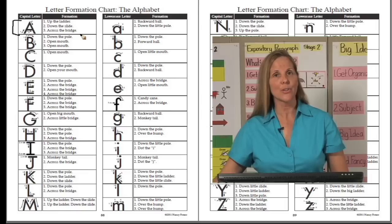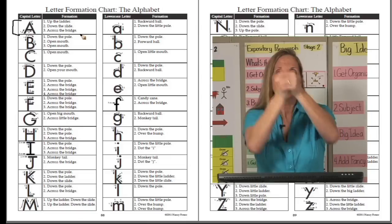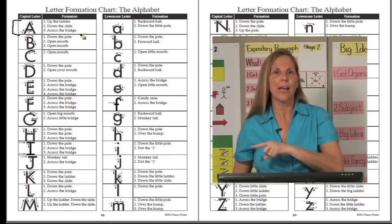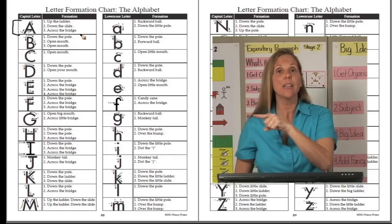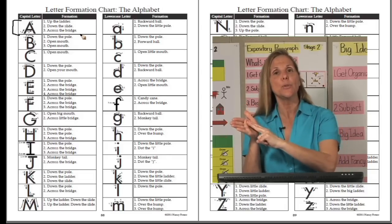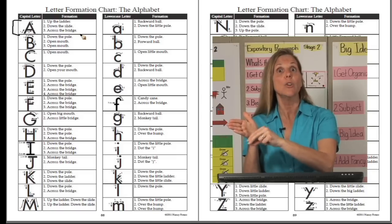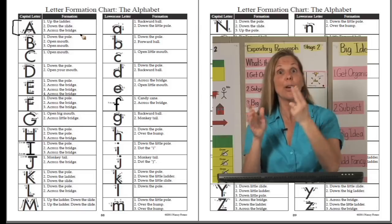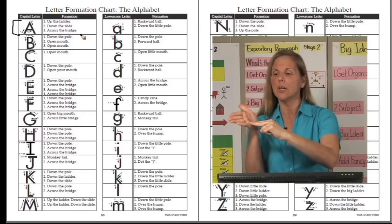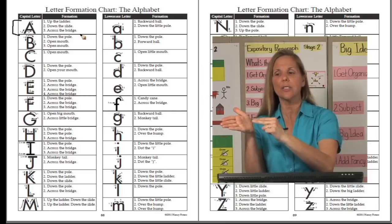When students are first learning the letter, they'll do body write: up the ladder, down the slide, cross the bridge. Then they'll do sky write with the same motions. Then palm write, starting with two fingers for more brain messages, then one finger, saying the chant each time.